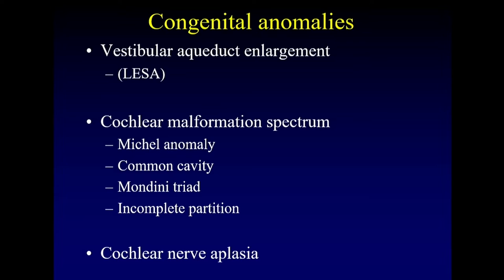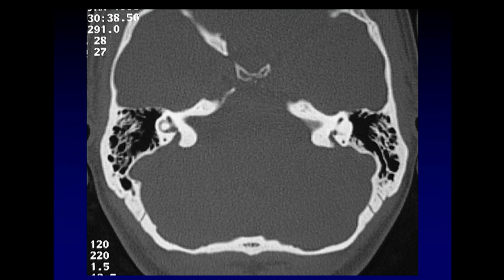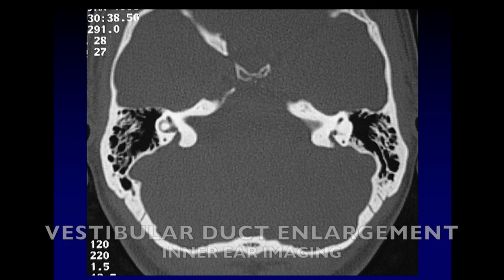Once we've talked about our cochlear malformations, we will talk briefly about cochlear nerve aplasia, a very important diagnosis in children who are being considered for cochlear implantation. So first, our vestibular aqueduct enlargement.